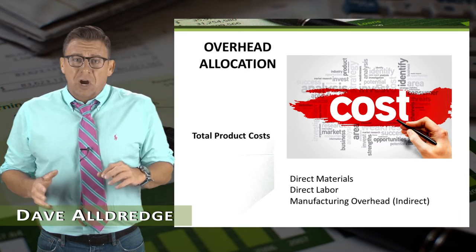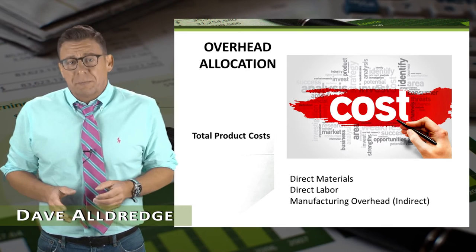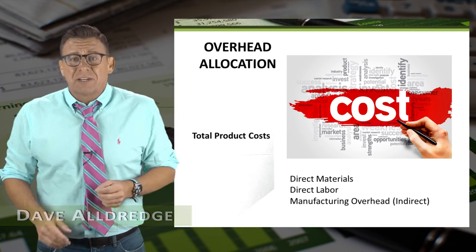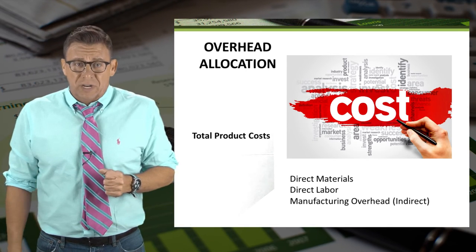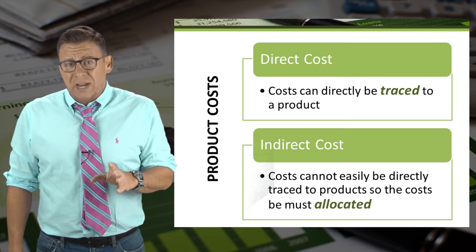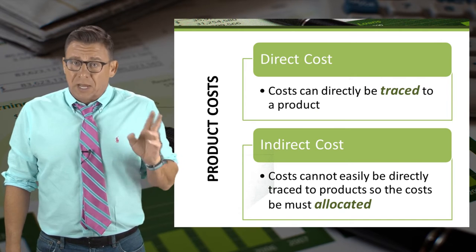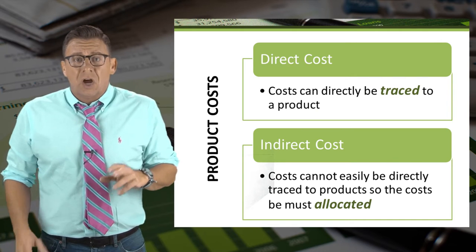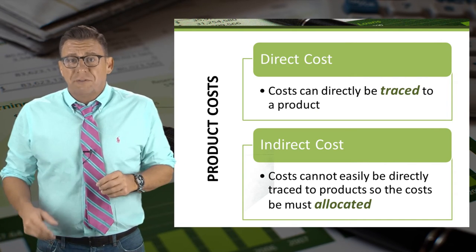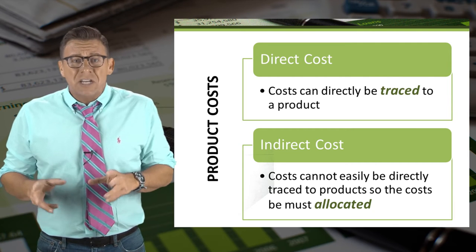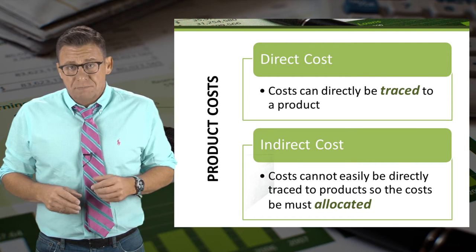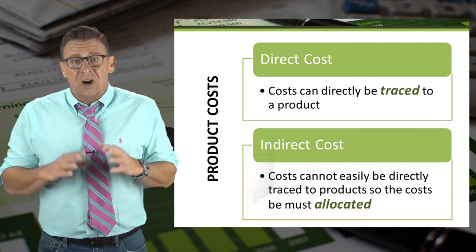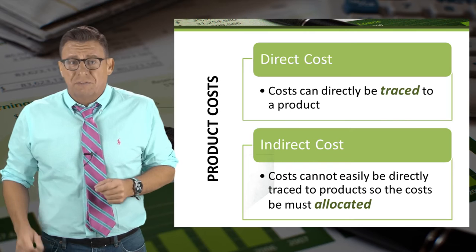Product costs are the total direct materials, direct labor, and indirect manufacturing overhead. Recall that direct costs, like direct materials and direct labor, are traced to finished product, whereas indirect costs, like manufacturing overhead, are allocated to the finished product.